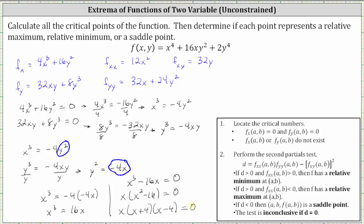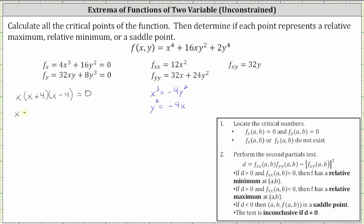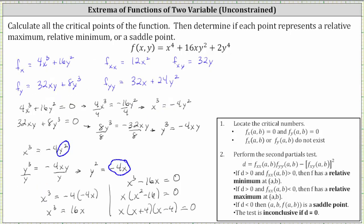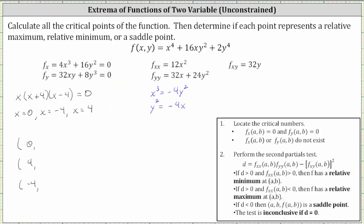Solving for x gives us x equals zero, x equals negative 4, and x equals positive 4. So we have three x-values to consider. We find the y-coordinates using y squared equals negative 4x. When x equals zero, y squared equals zero, and therefore y equals zero.